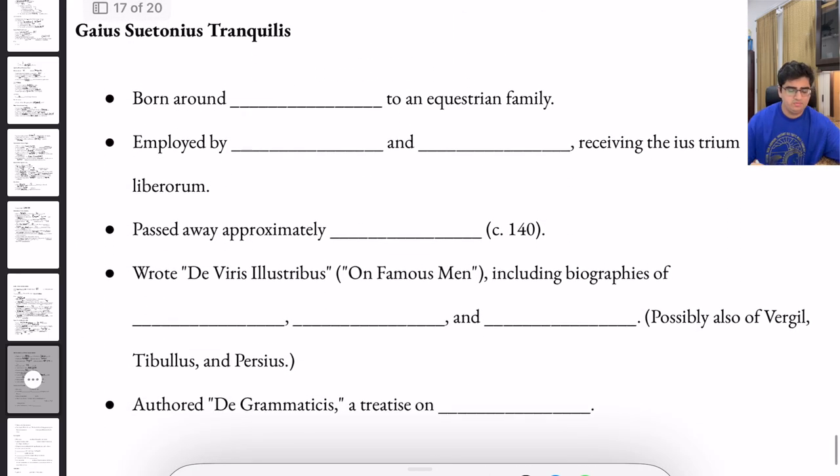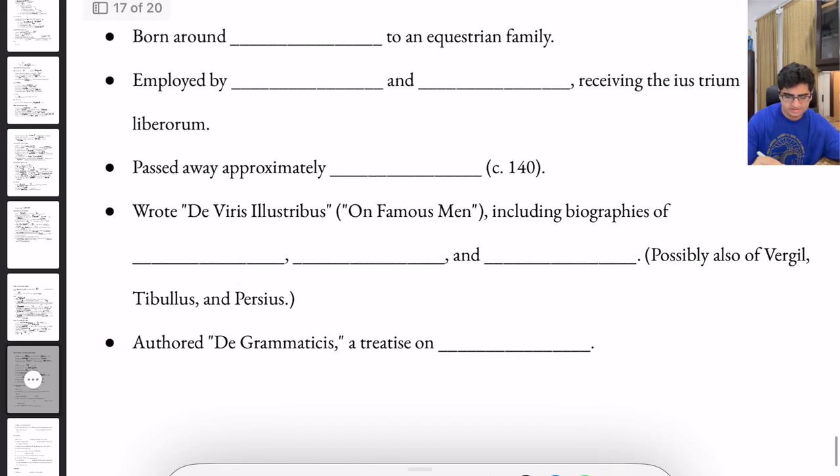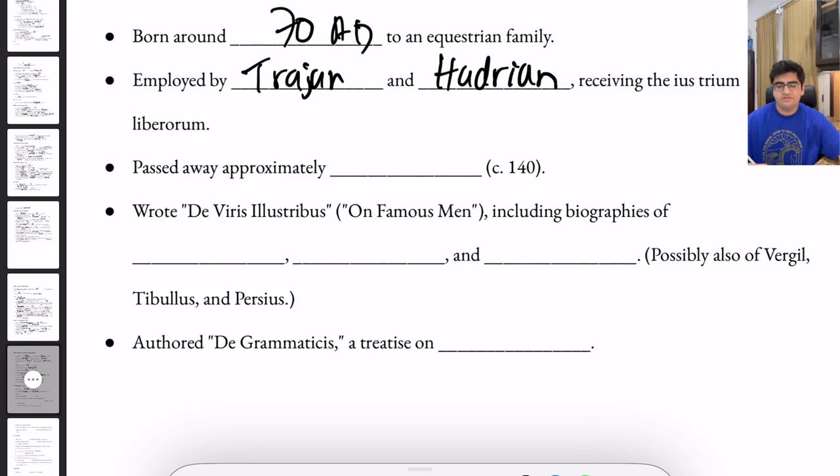Now we move on to Gaius Suetonius Tranquillus, or Suetonius. Born around 70 A.D. to an equestrian family, he was employed by Trajan and Hadrian, receiving the ius trium liberorum.